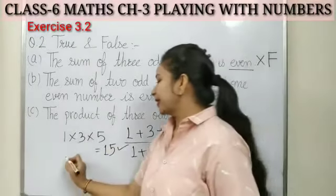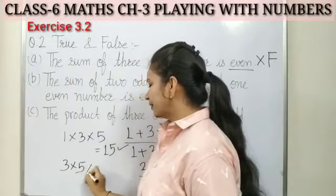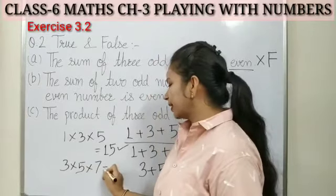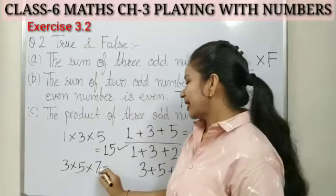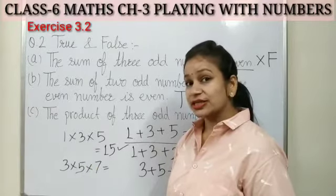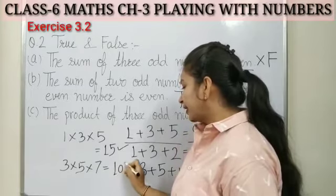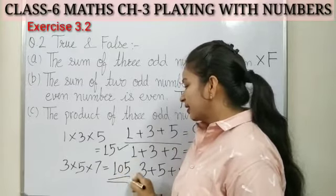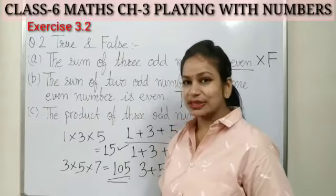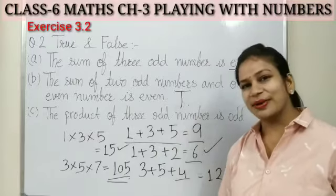Let's verify with another example. Take three, five, seven — three odd numbers. Multiply them: seven times five is thirty-five, and thirty-five times three is one hundred and five. One hundred and five is also an odd number. So whatever odd numbers we take, their product will always be an odd number.